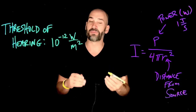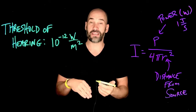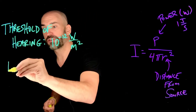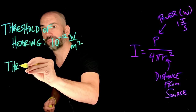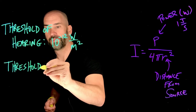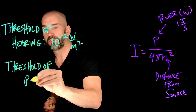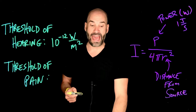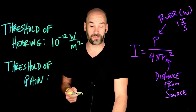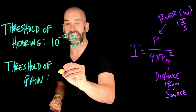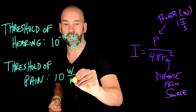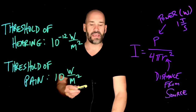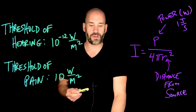But there's also a maximum — and by maximum, I mean the point at which we actually start to feel pain in our ears. That maximum is called the threshold of pain, and it is 10 watts per meter squared. This is a way of looking at and measuring the intensity of the sound that we actually hear.